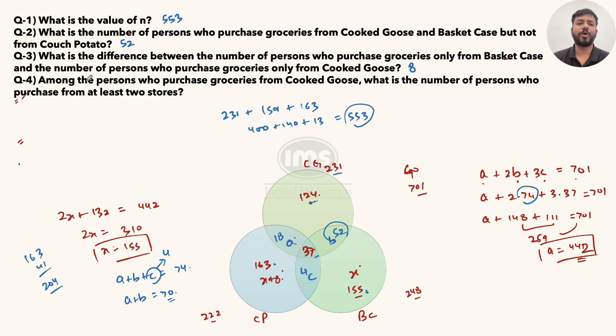Let's move on to the final problem: Among the persons who purchase groceries from Cooked Goose, what is the number of persons who purchase from at least 2 stores? So you have to add up this 18, this 52, and this 37. Because at least 2 stores includes both 2 and 3. So 18 plus 52 was 70, and 70 plus 37, this would turn out to be 107. And that becomes the answer to the final problem.